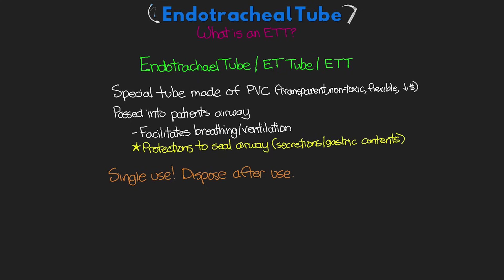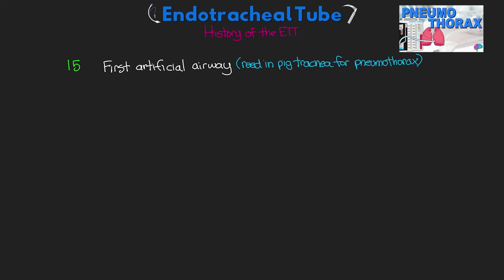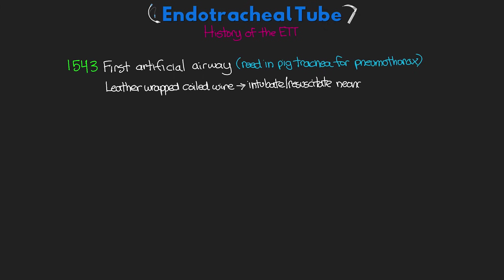Next I want to do a brief history of the endotracheal tube. It's not necessary to understanding the tube itself, so feel free to skip ahead, but it's a fascinating history. Interestingly, the first mention of an artificial airway was the placement of a reed inserted into a pig's trachea to treat a pneumothorax in 1543. Then a leather-wrapped coiled wire was used to intubate and resuscitate a neonate in 1754. It wasn't really until the late 1800s and early 1900s that the function we think of today came about, with development primarily related to surgery and anesthesia before being adapted to critical care.